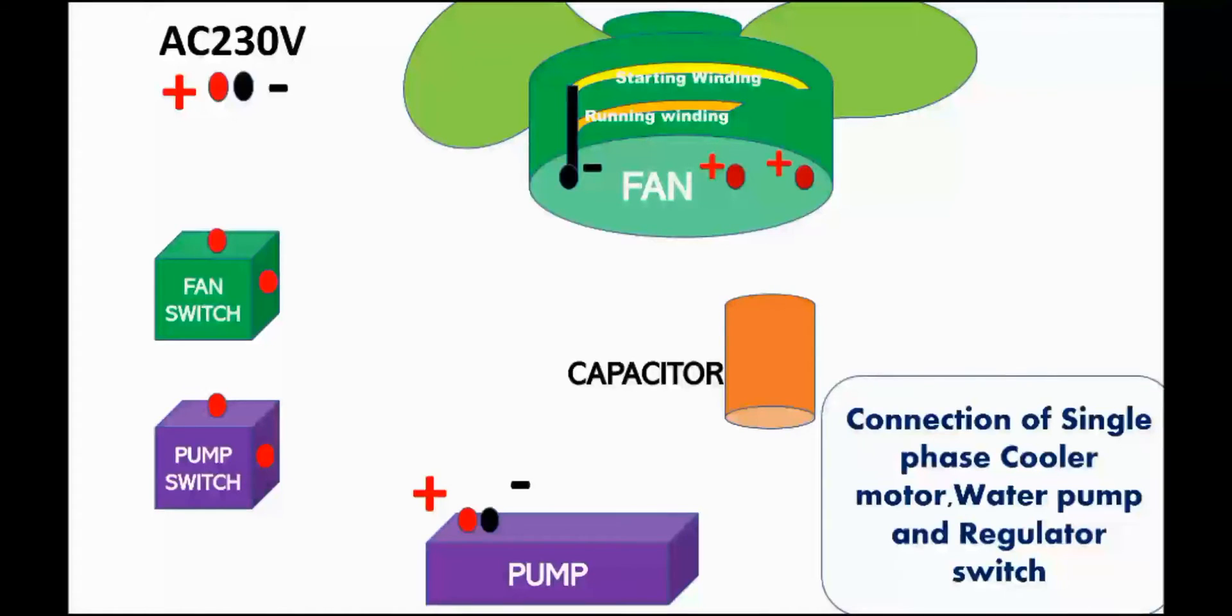Overall wiring diagram of a single speed water cooler by a presentation. Let's start. The main components of water cooler are single speed fan, water pump, capacitor, fan and pump switches. Now I am going to show the wiring connection.